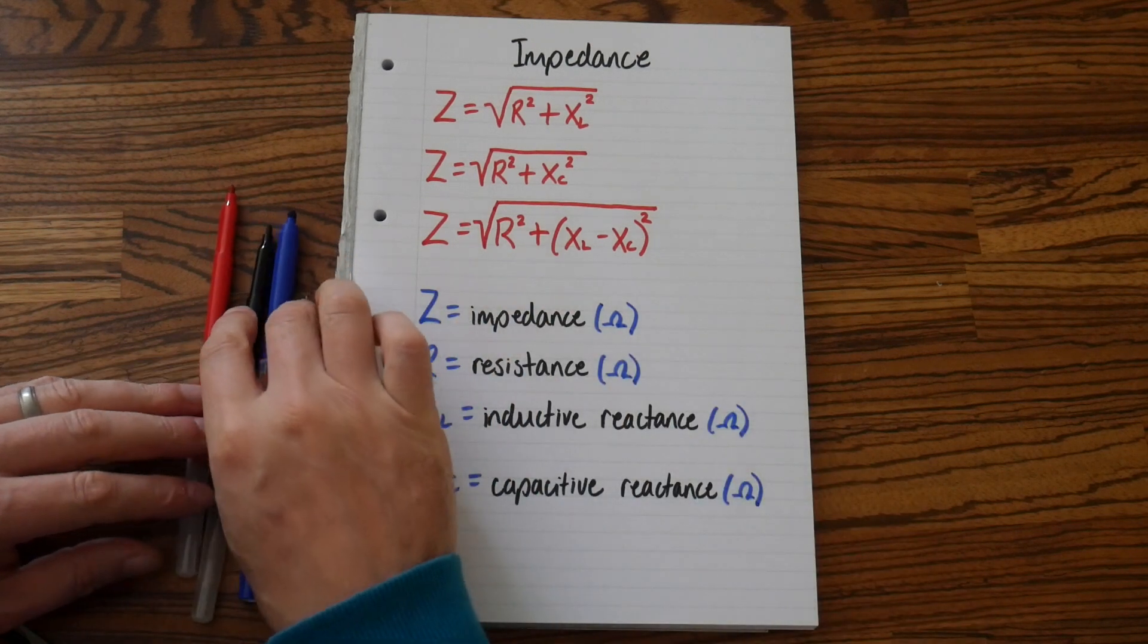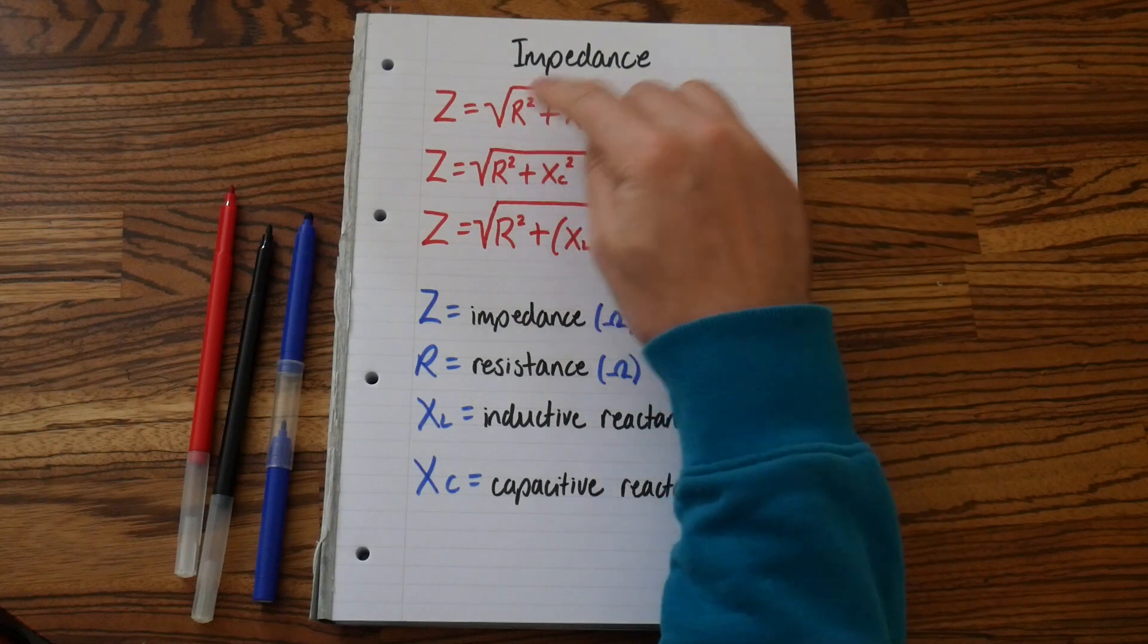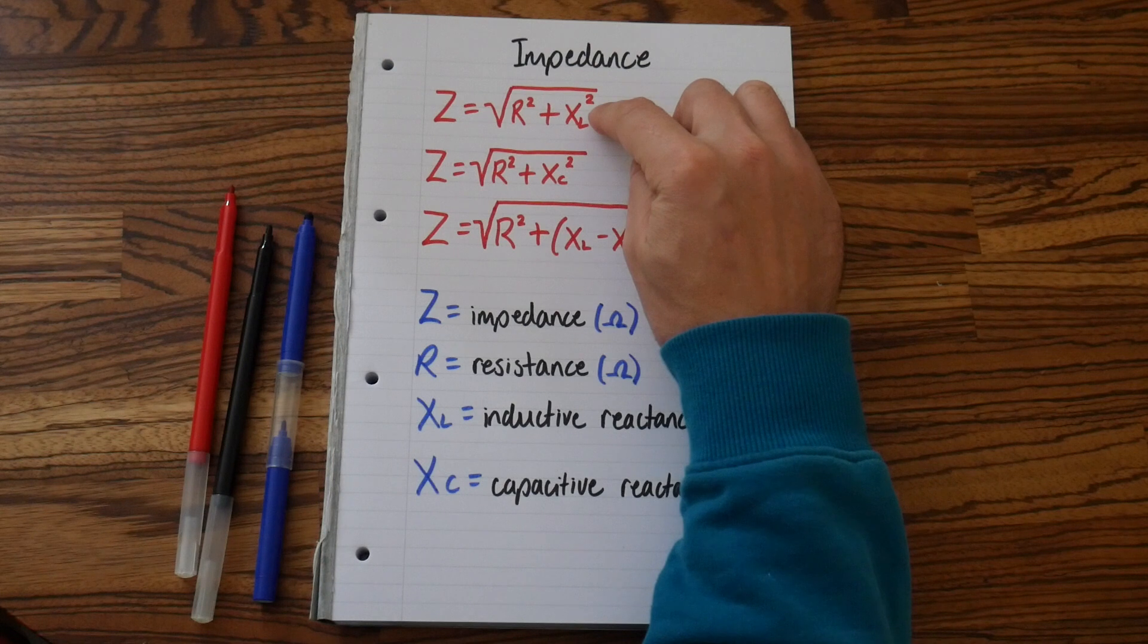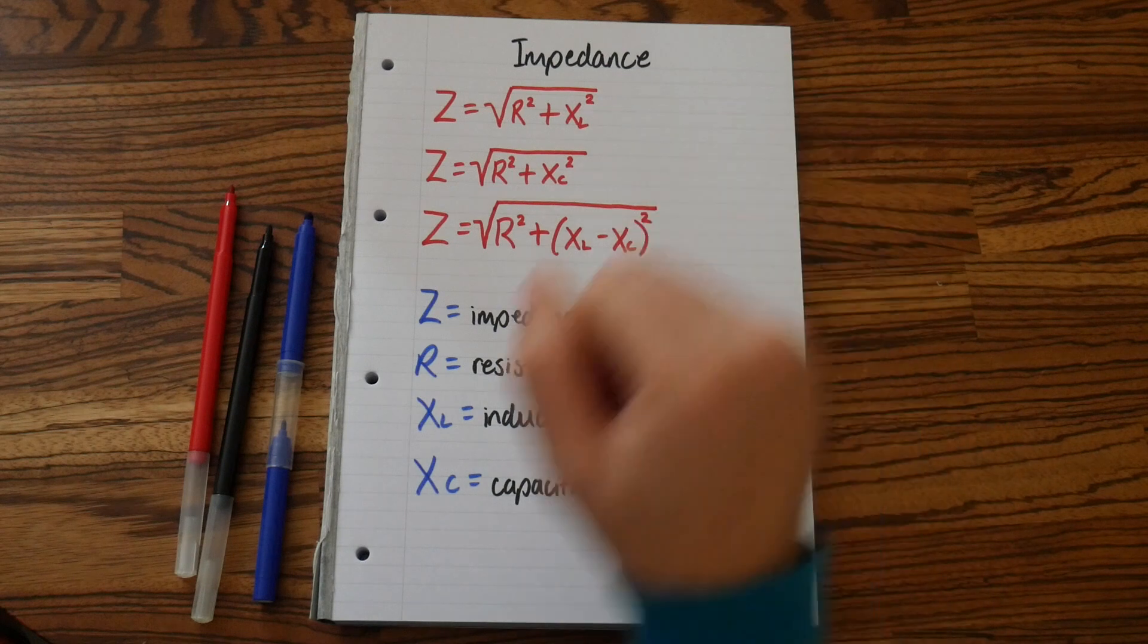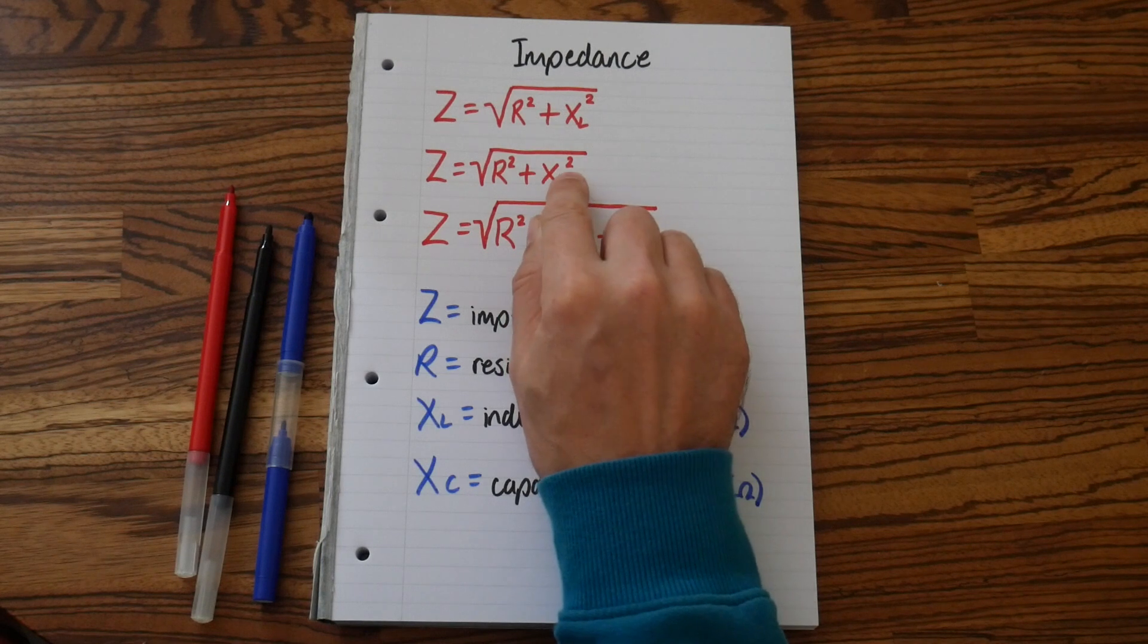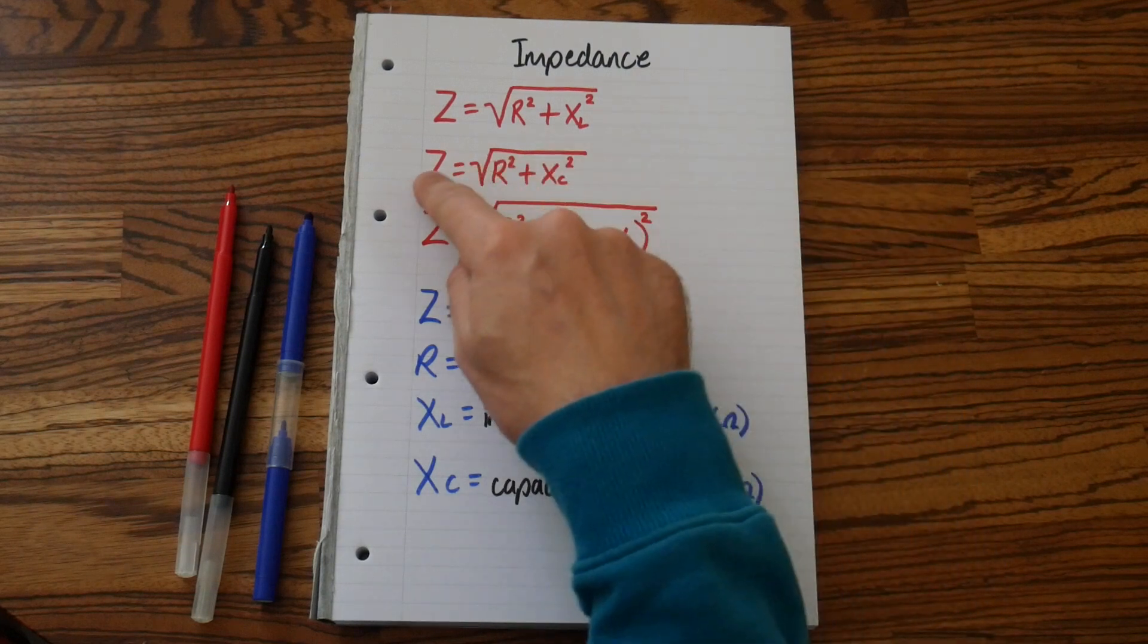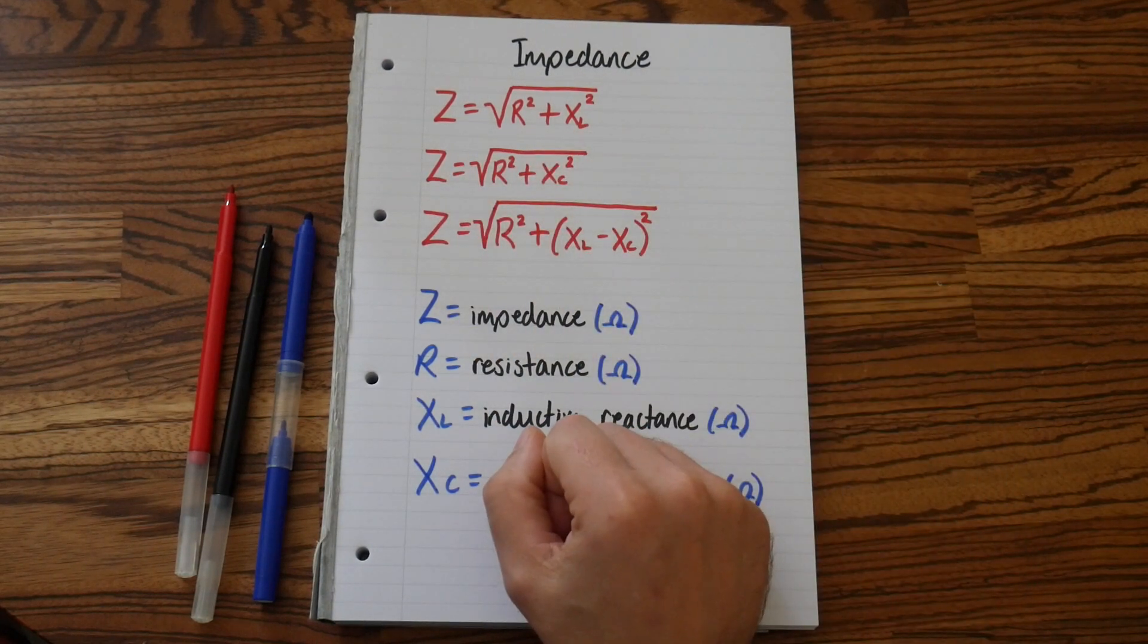Now, which formula do you use? It all depends on your question. If you have a circuit that has a resistor and an inductor, you would use this formula to find the total circuit impedance. If you had a circuit that had a resistor and a capacitor, you'd then work out the resistance of the capacitor, the reactance, and then you'd use this formula here to work out the circuit's total impedance.